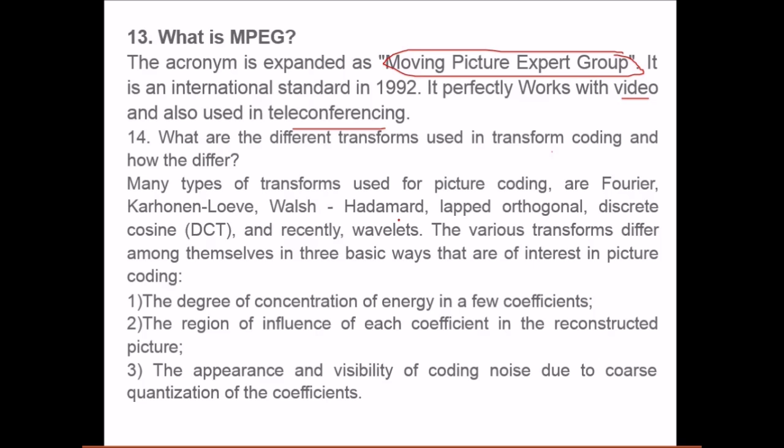The various transforms differ among themselves in three basic ways that are of interest in picture coding. First is the degree of concentration of energy in few coefficients. There are so many coefficients but only few of them contain all the concentration of energy. Second, the region of influence of each coefficient in the reconstructed picture. And third, the appearance and visibility of coding noise due to coarse quantization of the coefficients. Which of these will give good output perceptibly and digitally.